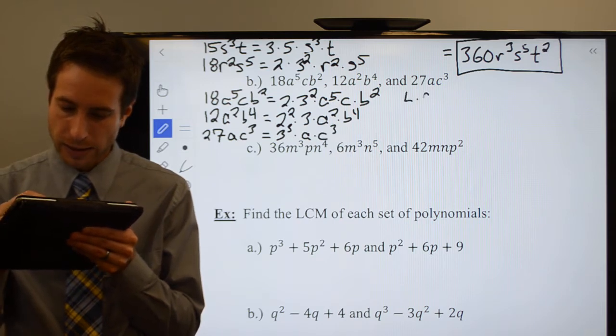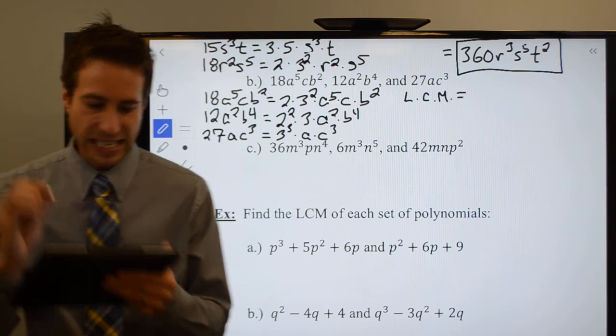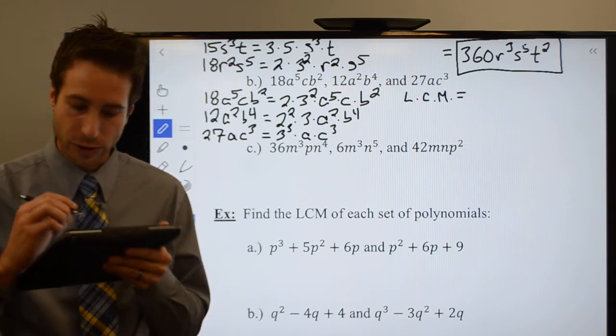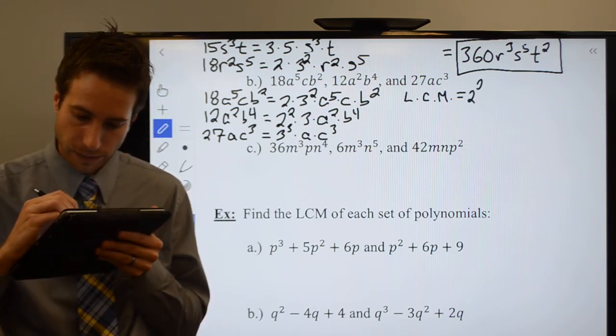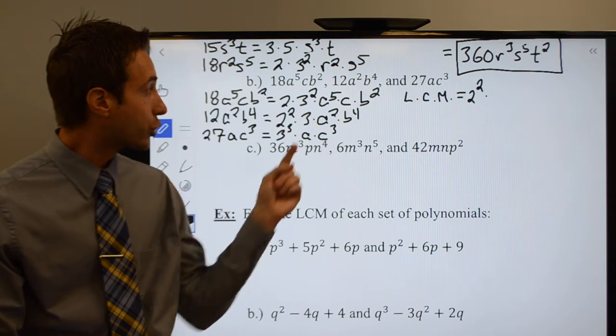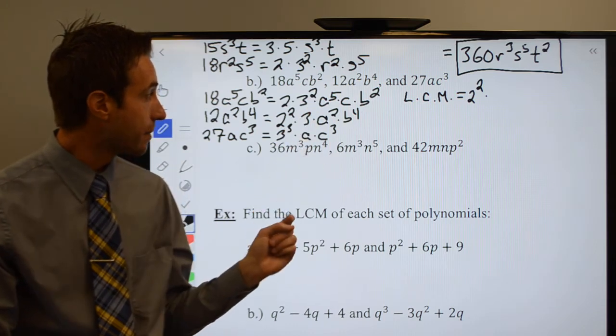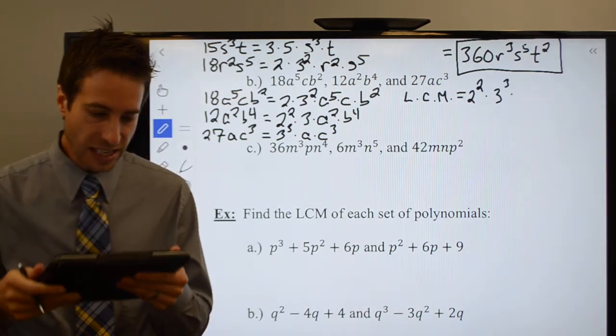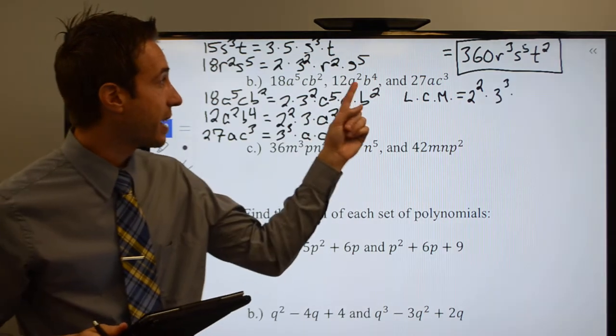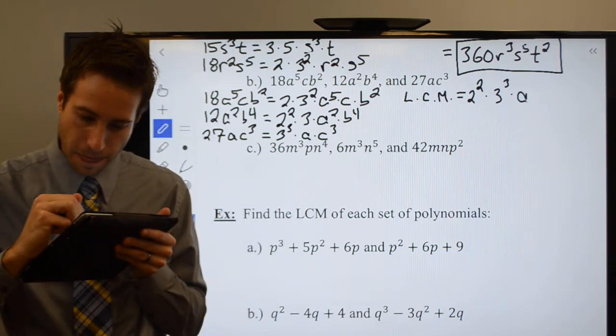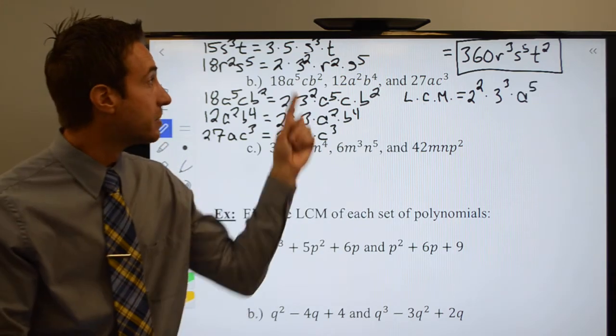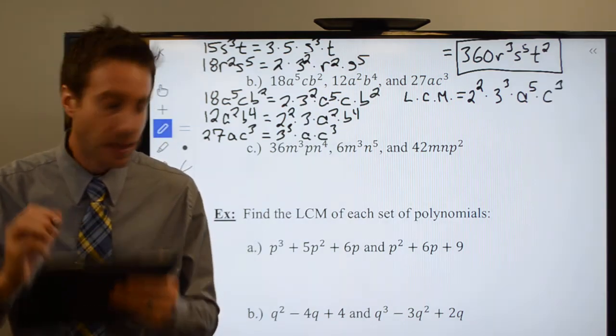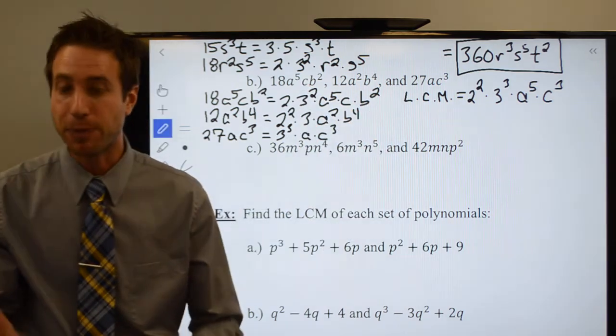Alright, so my LCM is each factor the greatest number of times I have it. 2 to the first, 2², I keep the 2². I have a 3², a 3, and a 3 to the third, I keep the 3 to the third. A to the fifth, a², a, keep the a to the fifth. C, c³, we keep the c³. And b², b to the fourth, we keep the b to the fourth.